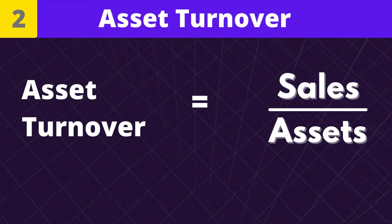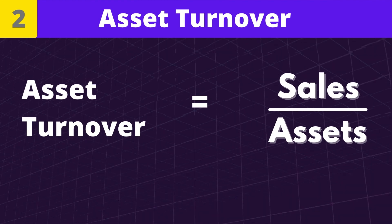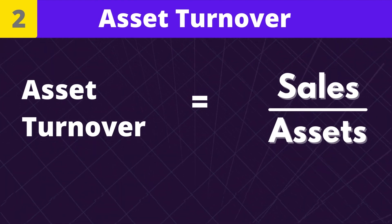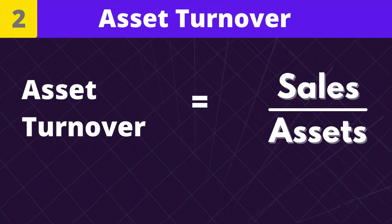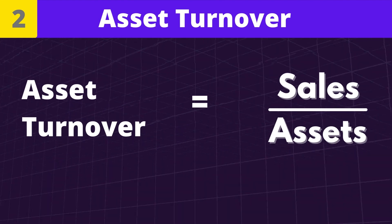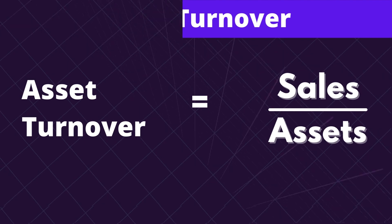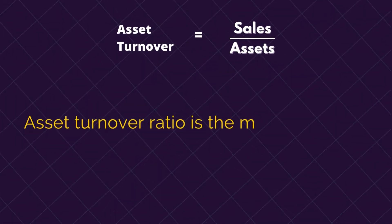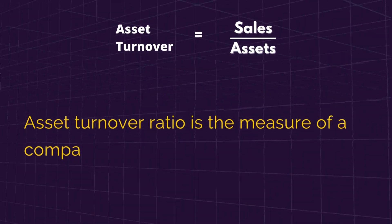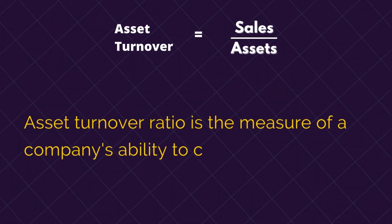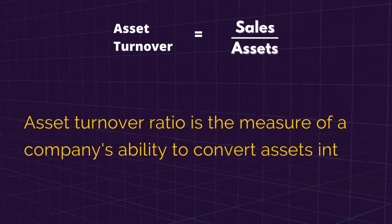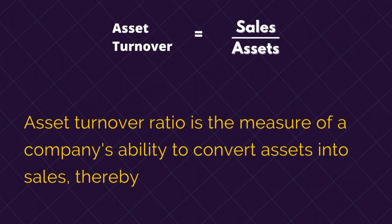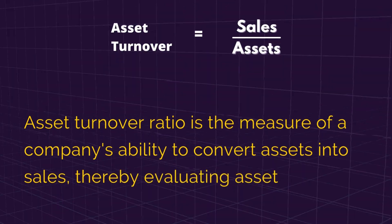Number 2: Asset Turnover. Asset turnover is equal to sales divided by assets. Asset turnover is the measure of a company's ability to convert assets into sales, thereby evaluating asset efficiency.